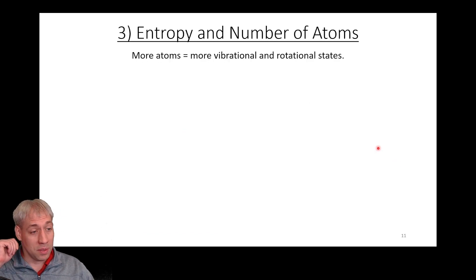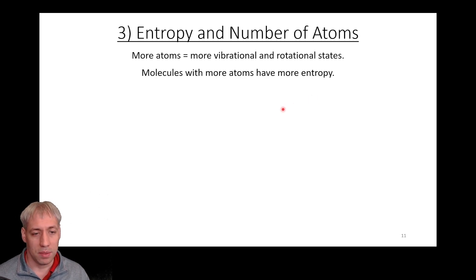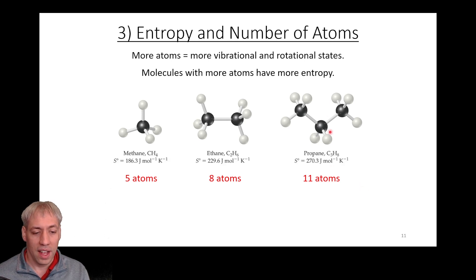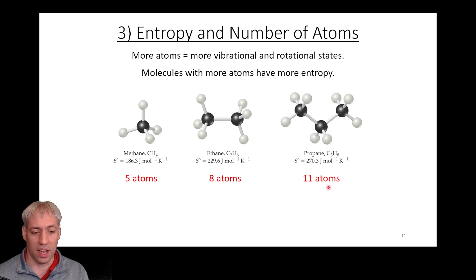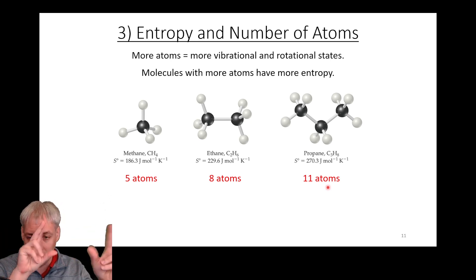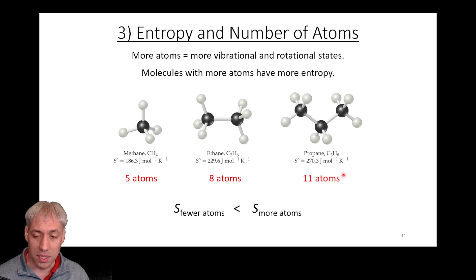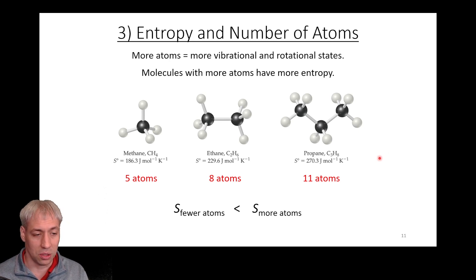The number of atoms or molecules also matters. Basically, the more atoms you have, the more entropy it's going to have — the more states it can exist in. So more atoms equals more entropy. Comparing hydrocarbons — methane, ethane, and propane (one carbon, two carbons, three carbons, with hydrogens to fill out the octet) — you can look at the number of atoms: 5 versus 8 versus 11. The more atoms, the more entropy, and you can see that in the tabulated S values: 230, 270, and 286. The entropy increases as you add more atoms because of the number of ways those atoms can move and vibrate.